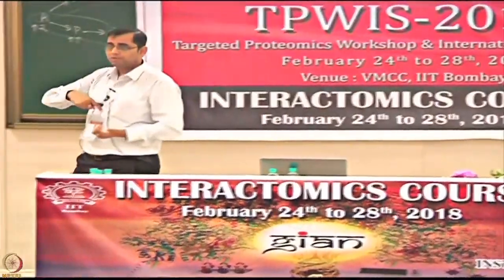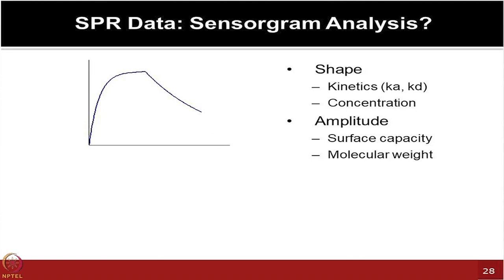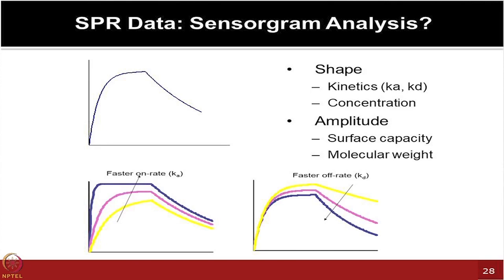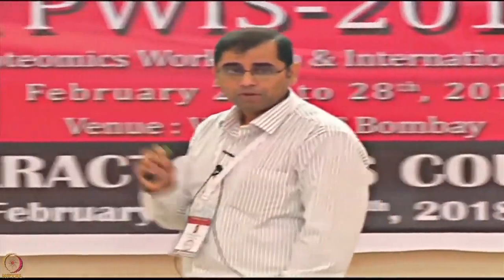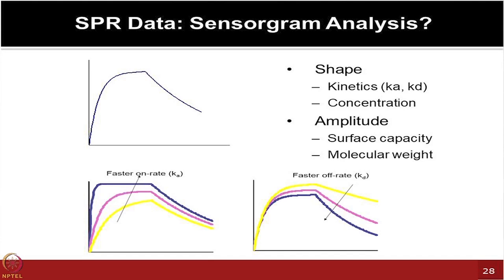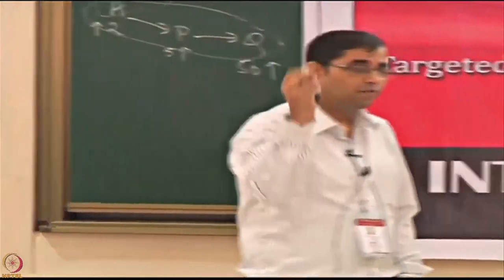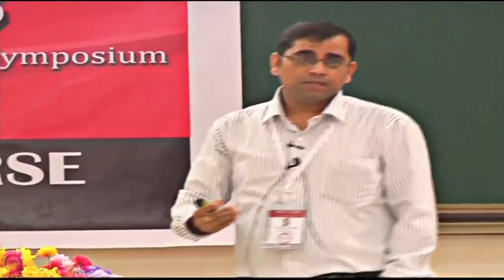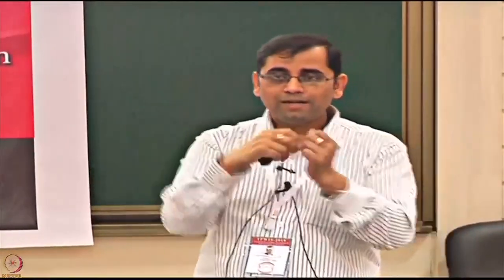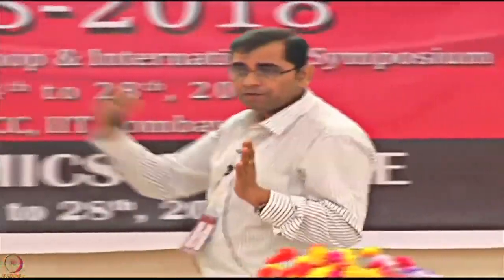SPR data curves tell you about kinetics, concentration, surface capacity, and molecular weight. Differences in on-rate and off-rate can be very powerful — for example, for a fast-acting drug you want a high on-rate and quick response, while for a long-term effect you want a slow off-rate so the drug stays bound longer. Both conditions might give the same KD value overall, but the on-rate and off-rate can be very different and critically important for your drug discovery portfolio.